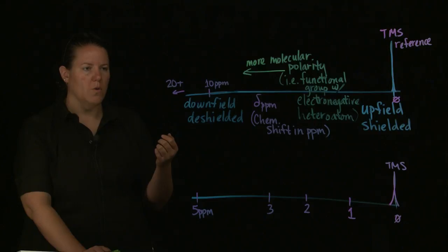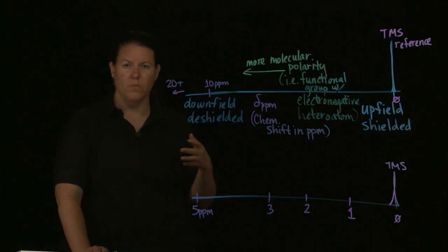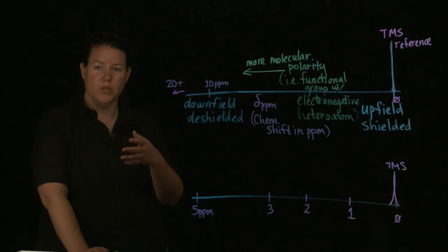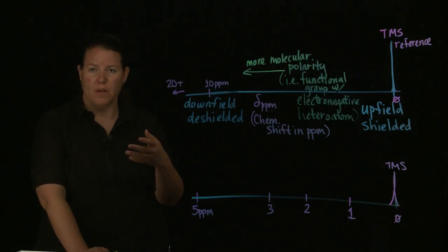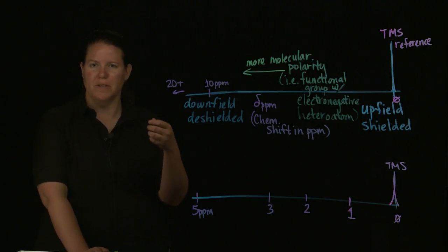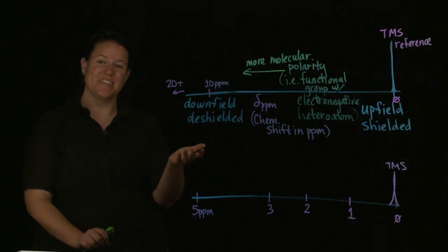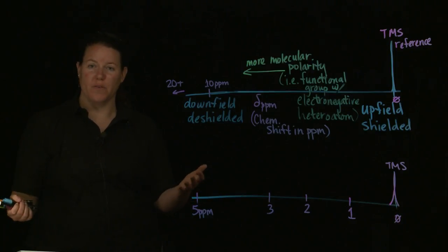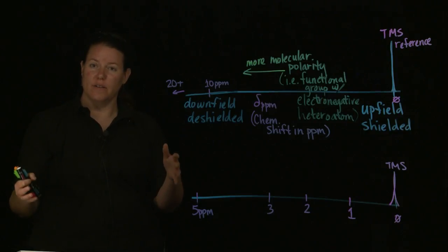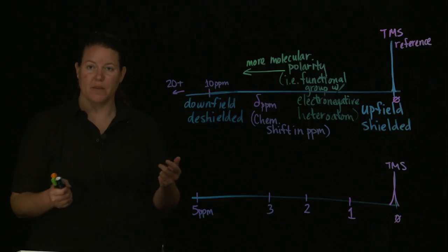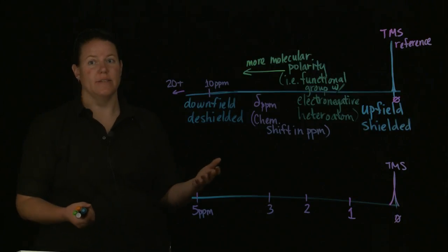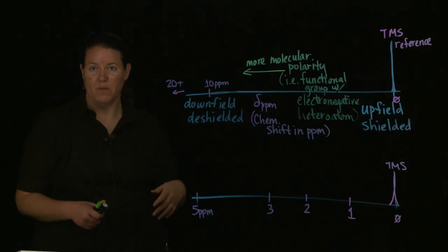In proton NMR, you can basically place an organic molecule into a magnetic field — you put it in a tube, you align the magnetic field. It's an external magnetic field, and when that external magnetic field is applied to your sample with protons in it, the protons will align in a certain way. Those alignments can be measured, the frequency can be measured, and then analyzed and put into a graph or an output.